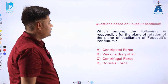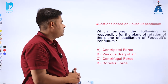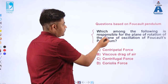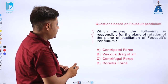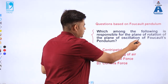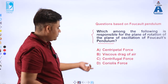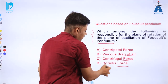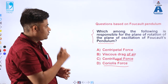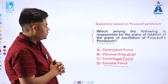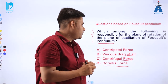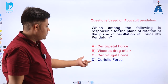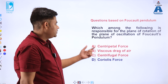Now an objective-type question: which among the following is responsible for the plane of oscillations of a Foucault's pendulum? The options are centripetal force, viscous drag of air, centrifugal force, and Coriolis force. The Coriolis force is responsible for the rotation of the plane of oscillations of the Foucault's pendulum — so Coriolis force is the correct answer.